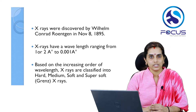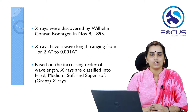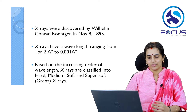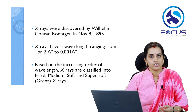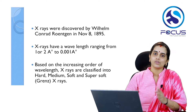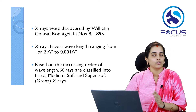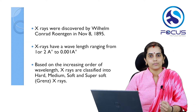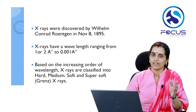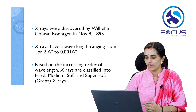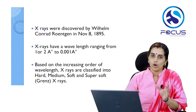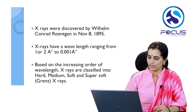X-rays have a wavelength ranging from one or two angstrom units to 0.001 angstrom units. Based on increasing order of wavelength, X-rays can be divided into hard, medium, soft, and super soft or grenz X-rays. Hard X-rays have a short wavelength and hence high penetration, whereas super soft or grenz X-rays have a long wavelength and hence very low penetration.